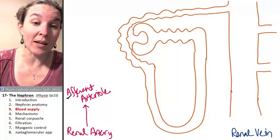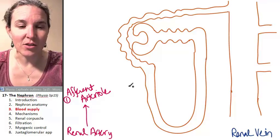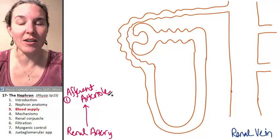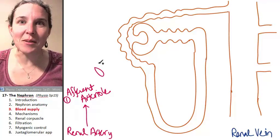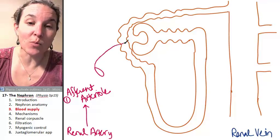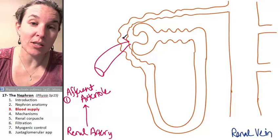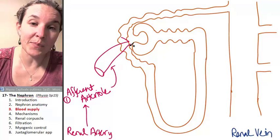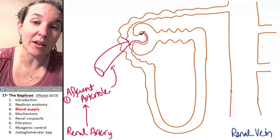There is going to be one afferent arteriole for every single glomerulus in your kidney, so there's a million of these afferent arterioles in each kidney. Afferent — going toward something. And in fact, we're going toward the structure I'm going to draw next, which is called the glomerulus. The afferent arteriole feeds into a knot of capillaries called the glomerulus.